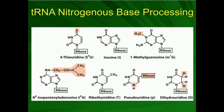So we've seen the synthesis of thiouridine, inosine, pseudouridine, ribothymidine, and prenylated bases. The other one is methylguanosine — that's just a simple N-methyltransferase SN2 reaction. For dihydrouridine, that's just a uridine reductase that takes uridine, uses NADPH, and reduces the double bond. We're not going to do those mechanisms in detail, but those are the main funny bases in tRNA. There are others, but these are the main ones.